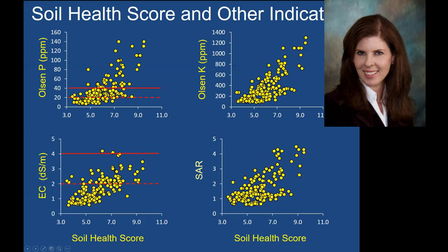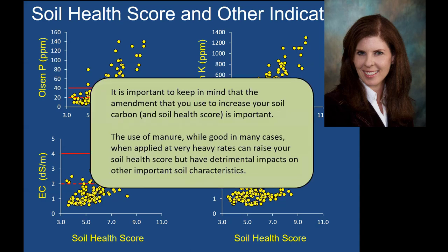Other indicators Amber mentioned — electrical conductivity (EC), which indicates salt, and sodium absorption ratio — as your soil health score was going up, EC and other negative indicators in the soil were also going up. So if you have salt-sensitive crops, you can start getting into situations where you may have problems over time. It's really important to keep in mind that the amendment you use to increase your soil carbon and therefore your soil health score matters. If you're using cover crops or other green manures, you're probably not going to see these issues. But using manure at really heavy rates over time can increase your soil health score while also having other detrimental impacts on other important characteristics.